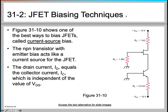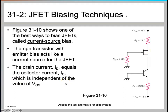The last JFET biasing technique is the current source biasing technique. In this technique, an NPN transistor is used along with the JFET. The NPN transistor with emitter bias acts like a current source for the JFET. The drain current equals IC, since they are both connected, and this drain current is independent of the gate-to-source voltage.